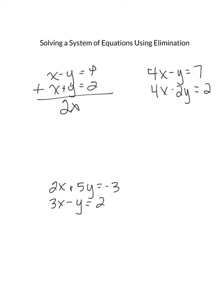They're actually going to eliminate one another, and that's going to equal 4 and 2 is 6. Divide both sides by 2 and you're going to get x equals 3.